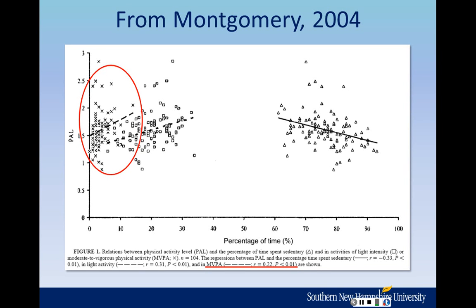These r's that are reported are correlation coefficients. We can interpret them on a scale of 0 to 1, ignoring the positive or negative sign. The closer to 1, the stronger the relationship. Of these three, the percent time spent sedentary is actually the strongest relationship — .33 is bigger than .31 and bigger than .22. I'm completely ignoring that negative sign with the .33. You can also take those r's and square them on your calculator to get r-squared. Multiply by 100 to get a percentage, which tells you how much variability in physical activity level the percentage of time spent sedentary can account for.